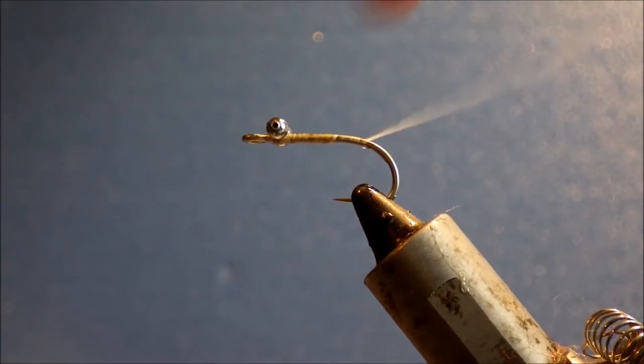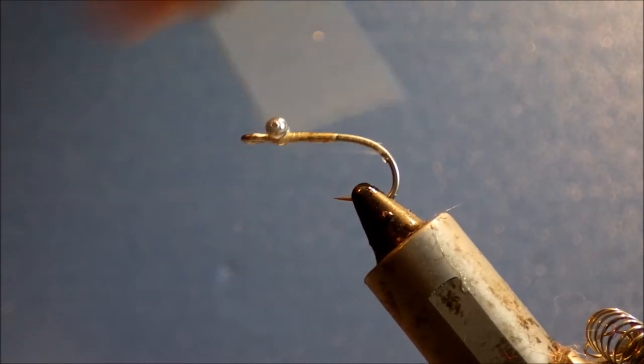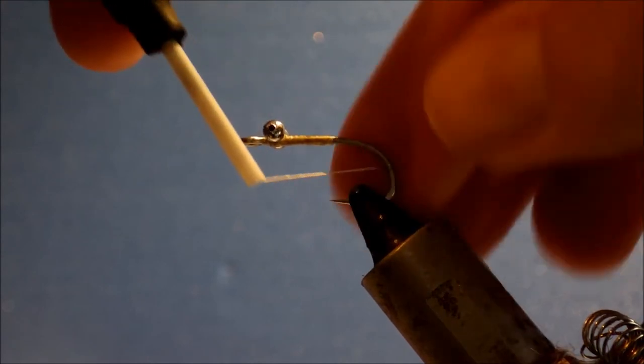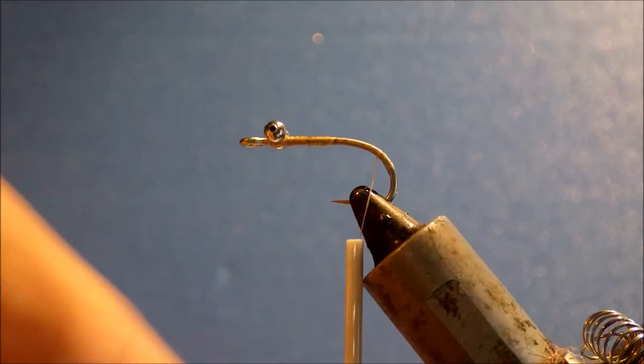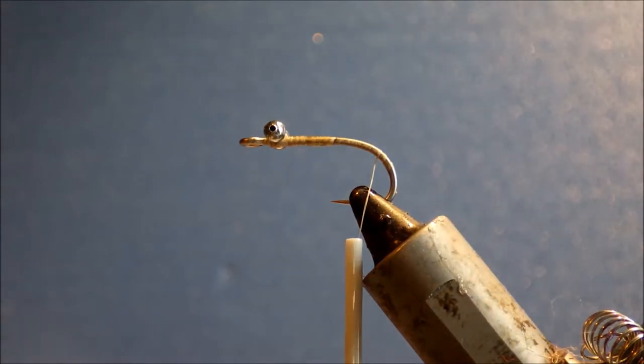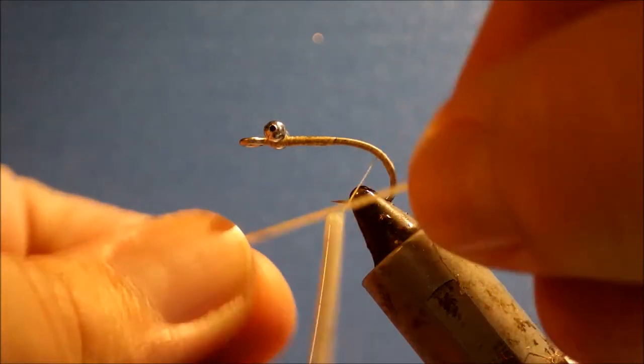So I'm just going to run my tan thread round the bend of the hook and then spiral it back 3 open turns, just sort of this half way round the bend.